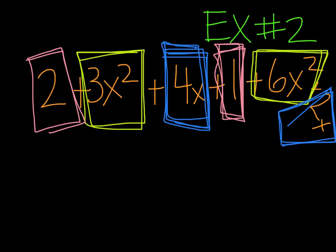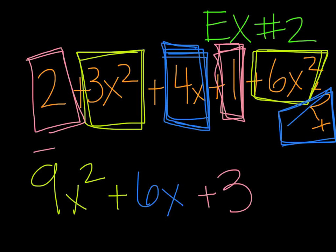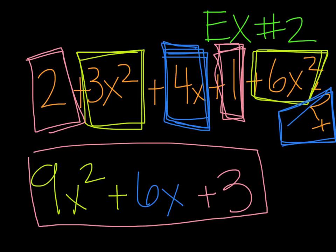Let's start combining things. Let's start with my x squared terms. I have 3x squared plus 6x squared, so that's a total of 9x squared. Let's move on to my x terms. I have 4x's plus 2x's for a total of 6x's. And then just my constants, I have a 2 plus a 1, which gives me 3. So my final expression after combining like terms is 9x squared plus 6x plus 3.